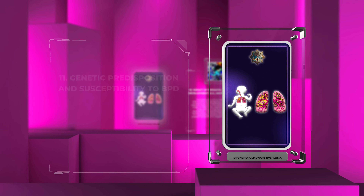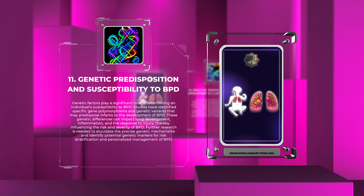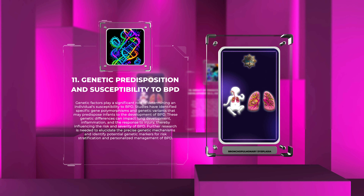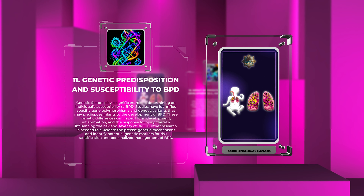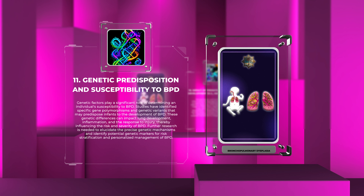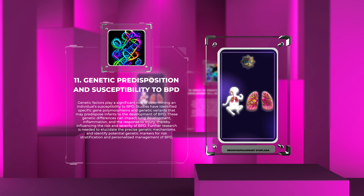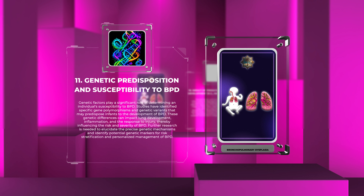Genetic factors play a significant role in determining an individual's susceptibility to BPD. Studies have identified specific gene polymorphisms and genetic variants that may predispose infants to the development of BPD. These genetic differences can impact lung development, inflammation, and the response to injury, thereby influencing the risk and severity of BPD. Further research is needed to identify potential genetic markers for risk stratification and personalized management.